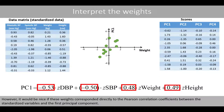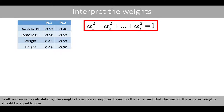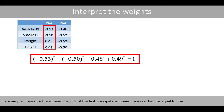However, it would be nice if these weights corresponded directly to the Pearson correlation coefficients between the standardized variables and the first principal component. We'll now see how we can convert these weights to represent correlation coefficients instead. In all our previous calculations, the weights have been computed based on the constraint that the sum of the squared weights should be equal to 1. In our example, this means that the sum of the four squared weights should be equal to 1 — and if we sum the squared weights of the first principal component, we see that it is indeed equal to 1.